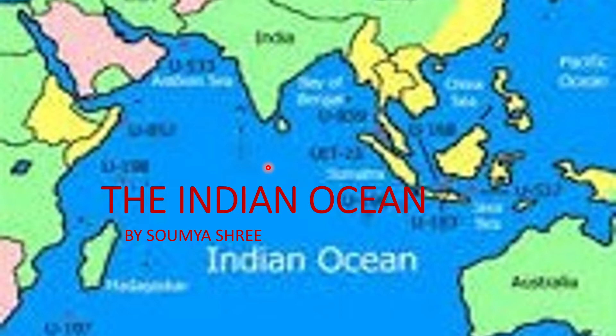Do you know why India is called the Indian subcontinent? India is covered by water on all of its three sides except the fourth side. That's why it's called a subcontinent. What are these three water bodies which cover India? On to the right of India there's the Bay of Bengal, and to the left there's the Arabian Sea. And just below India there's the Indian Ocean.